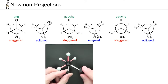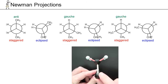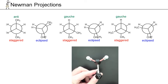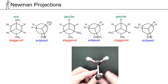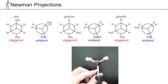If we rotate another 60 degrees clockwise, we're back to another eclipsed conformation, and this one is higher energy — less stable than the last eclipsed as well. In this case, it's because these two large methyl groups are now the ones eclipsing each other. The bigger the groups eclipsing each other, the higher the energy. So not all eclipsed conformations are equivalent, and not all staggered are equivalent.